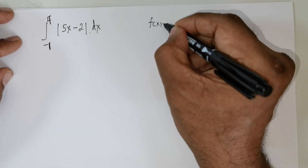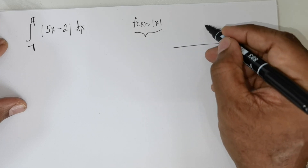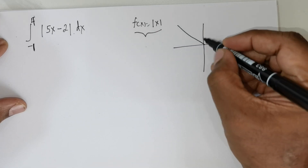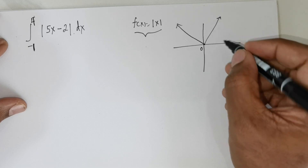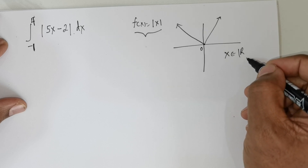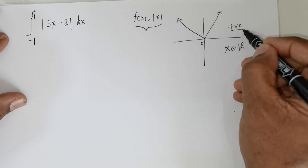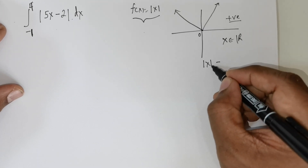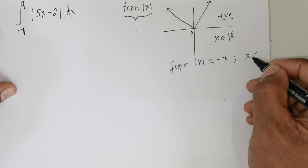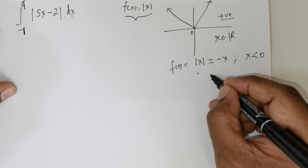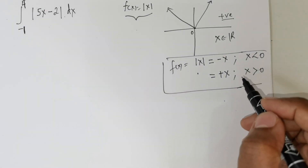First, let me define f(x) = |x|. If you were to draw the graph of this function, it hits at 0 and moves up on both sides. For all values of x on the real number line, the graph stays on the positive side. The piecewise definition is: f(x) = -x for all x less than 0, and f(x) = x for all x greater than 0. This crucial definition must be remembered when dealing with this function.